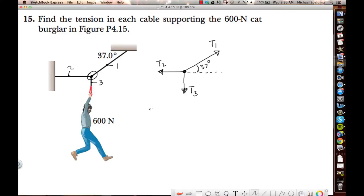Step 2: Sum forces for x and y. So you always treat the x and the y separately. And by the way, what's this T3 have to be? It's got to be 600 newtons. Let me show you why real quick. If you do a free body diagram for this cat burglar, here's the cat burglar.